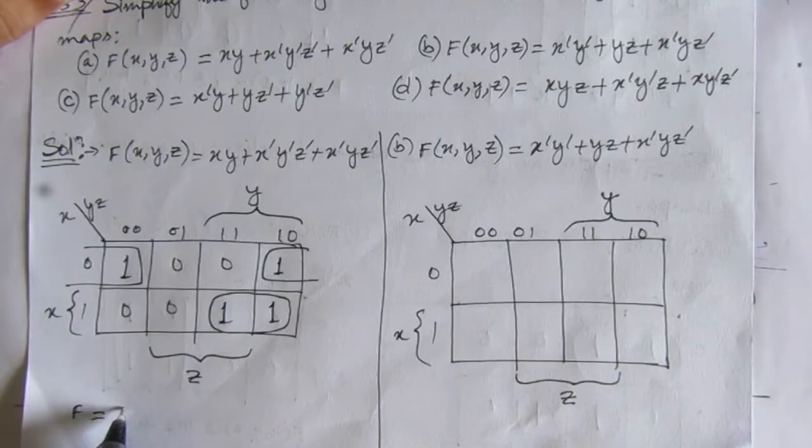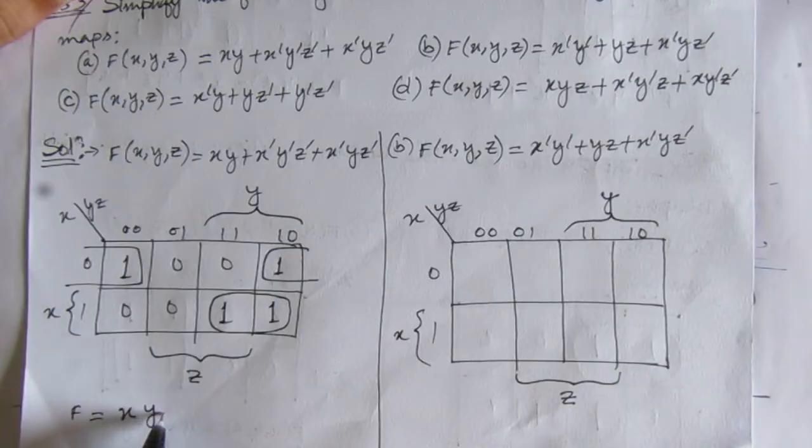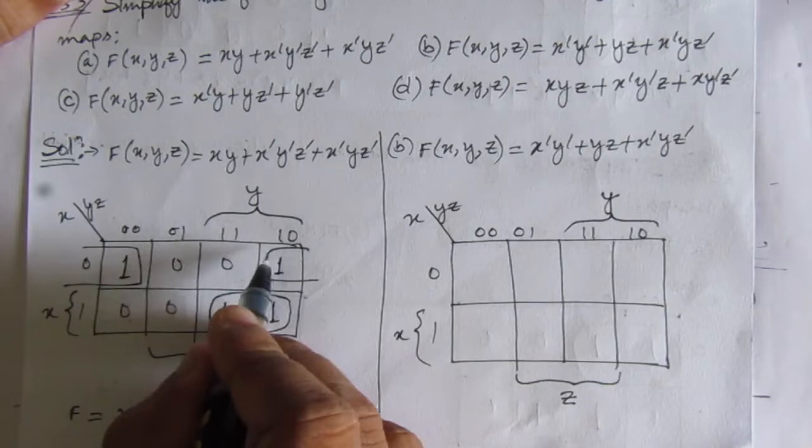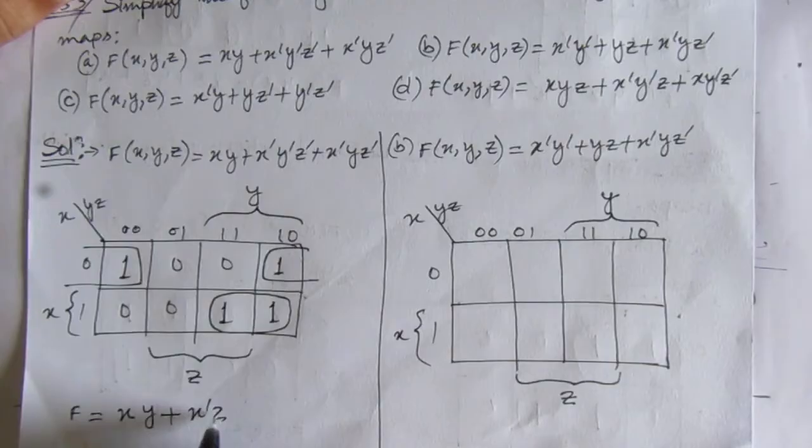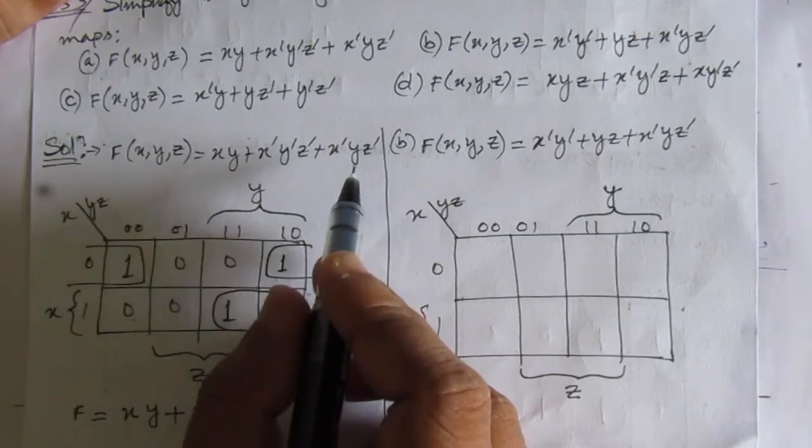From the first grouping we can write xy. From the second combination, this whole line is x bar, and y is cancelled because it covers both 0 and 1, giving us x̄z̄. So the simplified Boolean expression is xy + x̄z̄. Previously we had three terms; after simplification we get xy + x̄z̄.